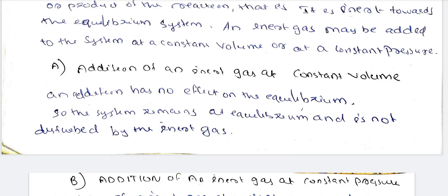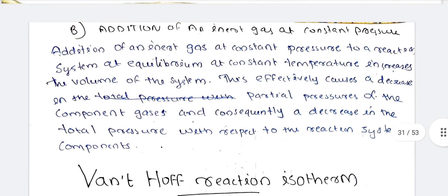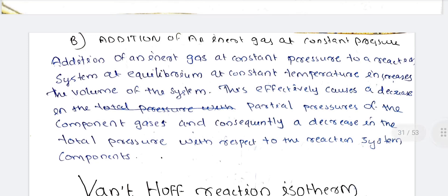For addition of an inert gas at constant pressure: adding an inert gas at constant pressure to a reaction system at equilibrium at constant temperature increases the volume of the system. This effectively causes a decrease in the partial pressure of the components of the system, and consequently a decrease in the total pressure with respect to the reaction system components. If you add an inert gas at constant pressure, the volume of the system increases and the pressure decreases.